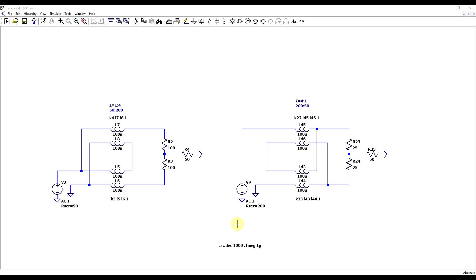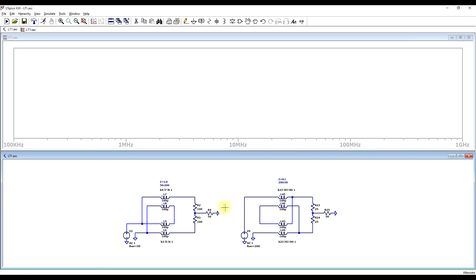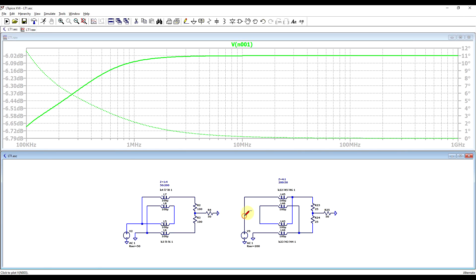First off, I made a set of circuits that uses the basic Guanella transformer, once as a 1 to 4 impedance balun going from 50 ohms to 200, and the second time it's a 4 to 1 balun going from 200 ohms down to 50. The difference being which side is balanced and which is unbalanced.